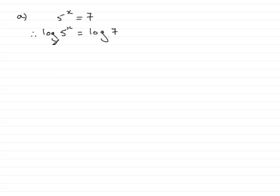Then by the power rule of logs - that is, if you have something to the power, you can bring the power out the front - that becomes x log 5 equals log 7. Then all you need to do next to get x is divide both sides by the log of 5. So x would equal log 7 divided by log 5.